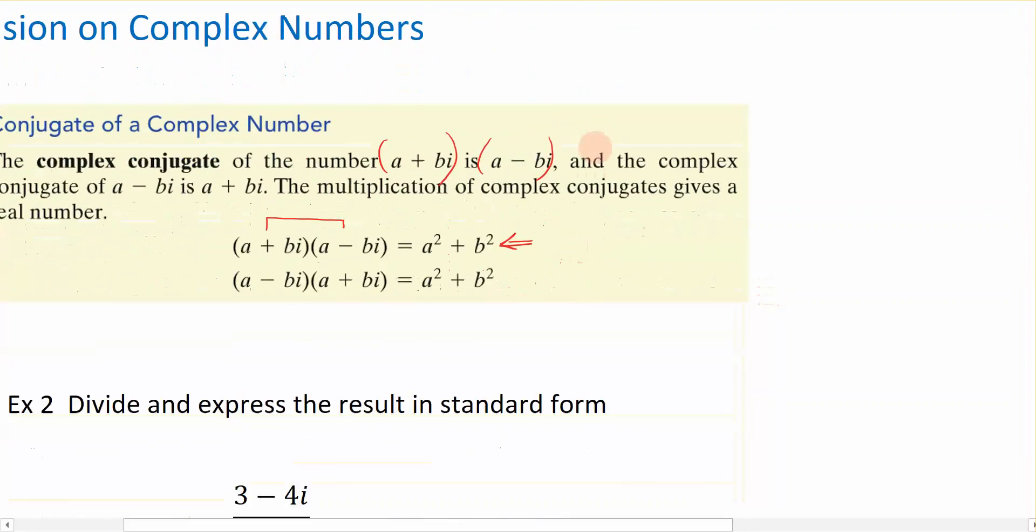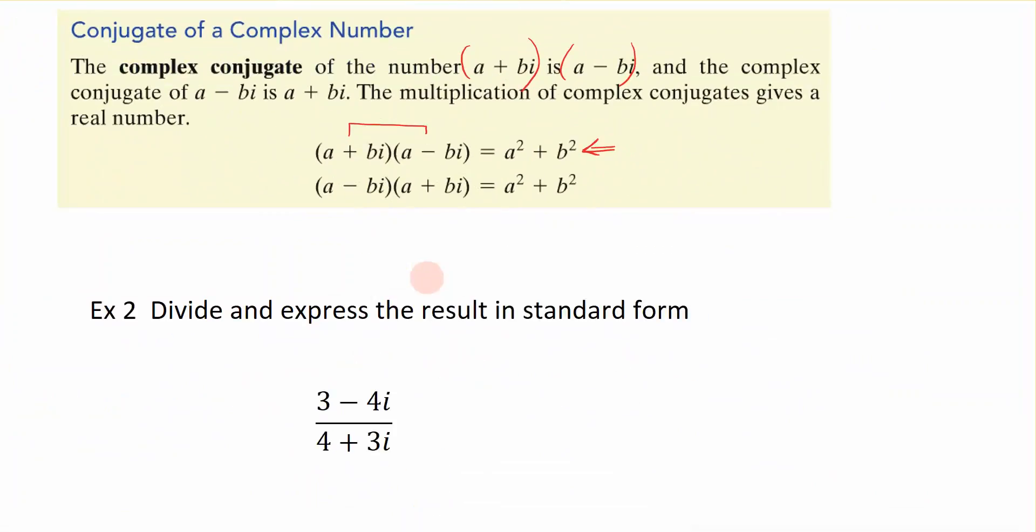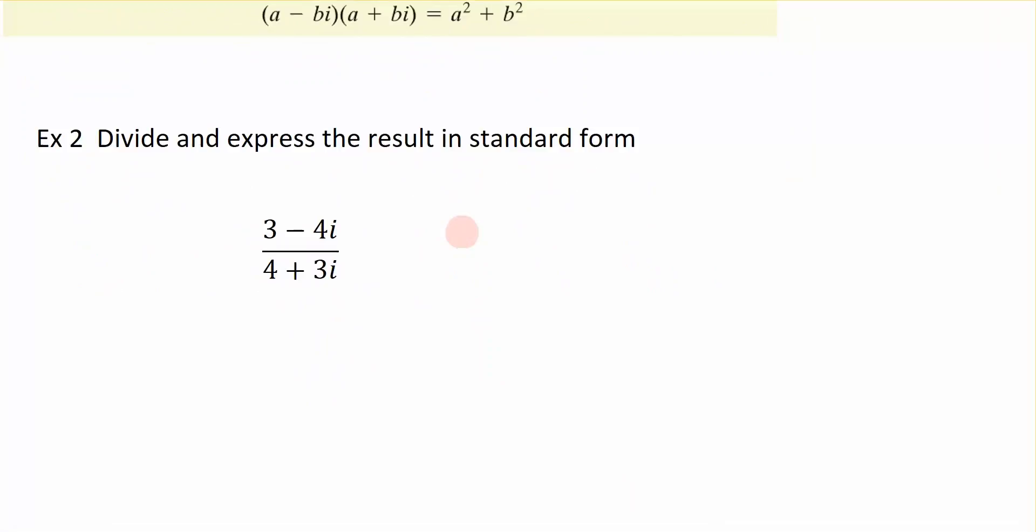So now let's go back here and let's talk about if I divide complex numbers, then I'm going to use a conjugate to get rid of an imaginary number in the denominator. And this is what it looks like. So I have this example right here, 3 minus 4i, divided by the complex number 4 plus 3i. Now, these are not the same complex numbers.